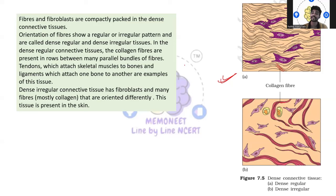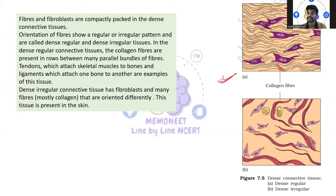Whereas in dense irregular tissues, the fibroblasts and many fibers — mostly collagen fibers — are orientally diffused and freely accumulated. This tissue is present in the skin region.